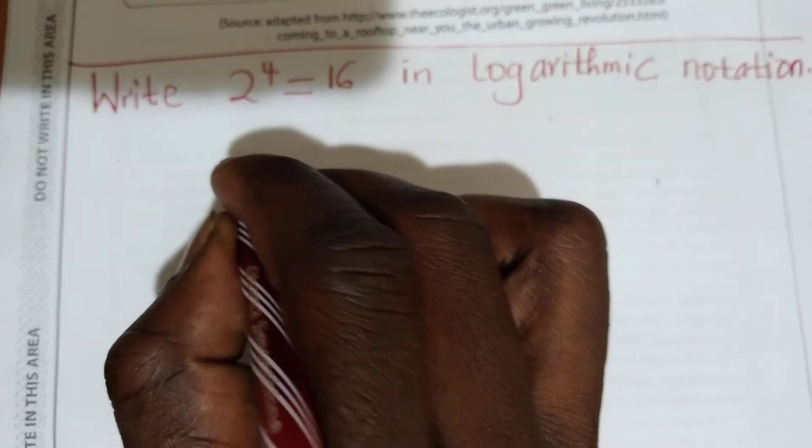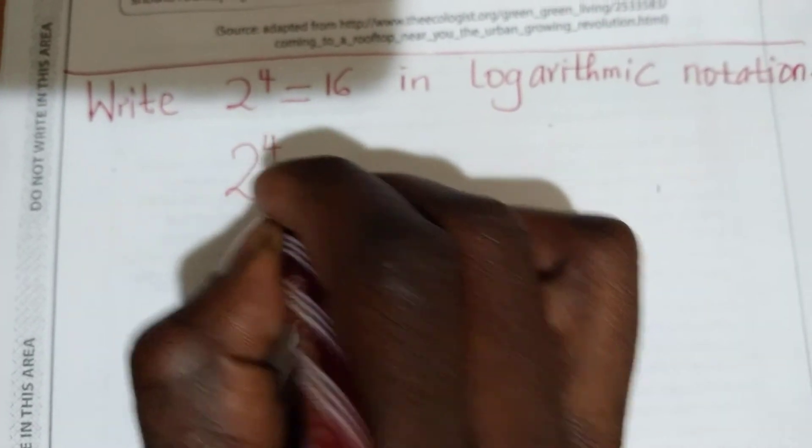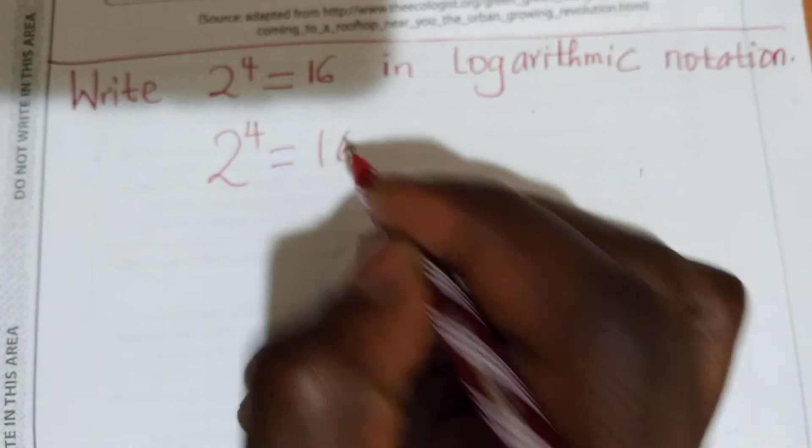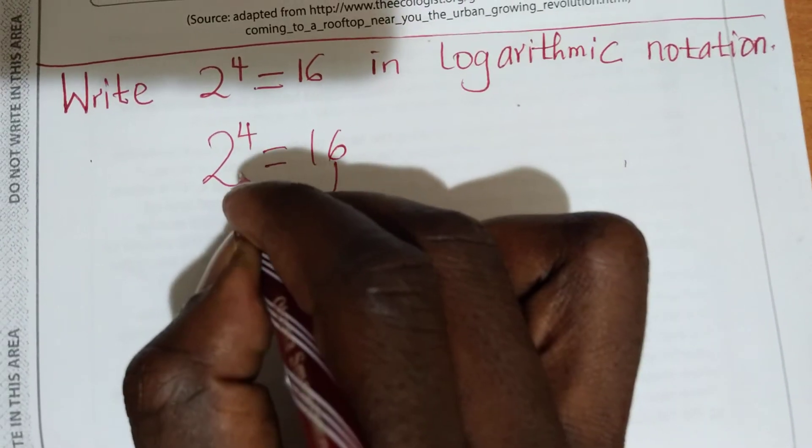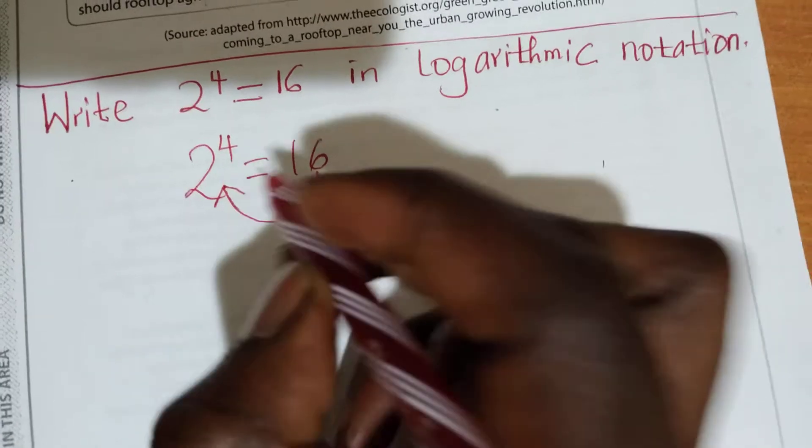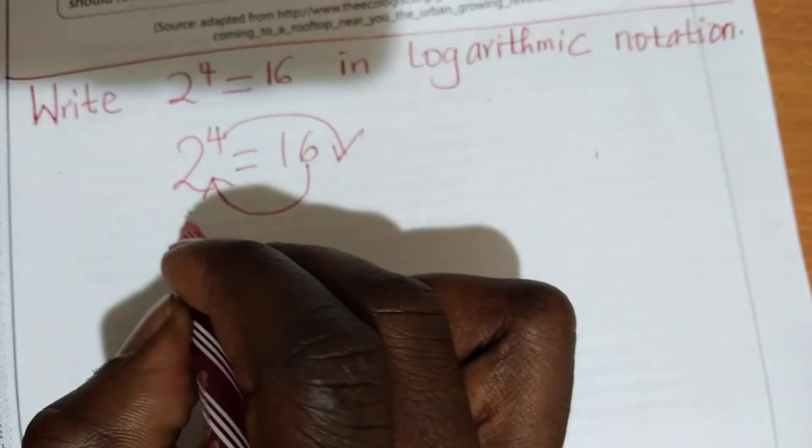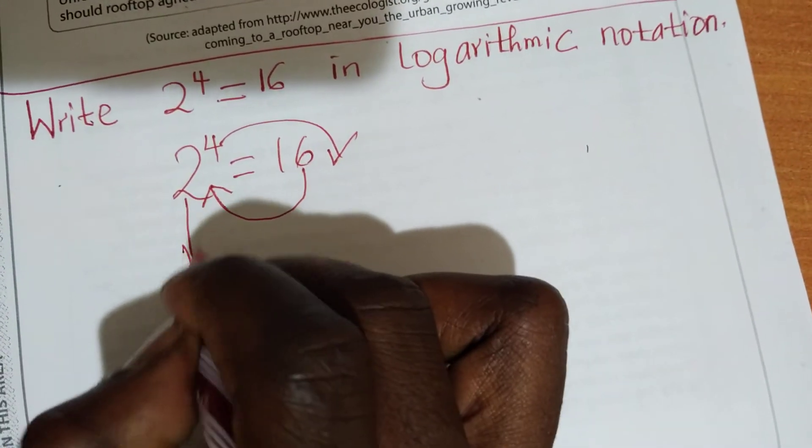We now write 2 raised to power 4 is equal to 16. What happens next? 16 will come here with an arrow, while the 4 will come here. And the 2 goes downwards.